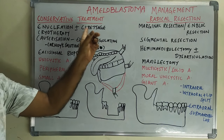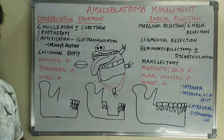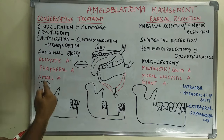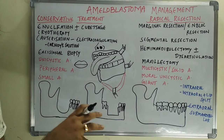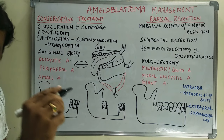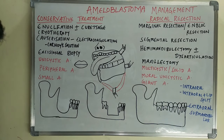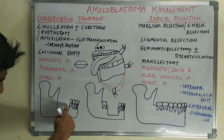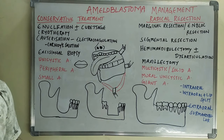If we add curettage, then after enucleation, we take a curette and scrape the walls of the bony cavity. After removing the teeth and the complete ameloblastoma lining, we scrape these walls with the curette so that 1 to 2 mm of bone is removed. That is called curettage.